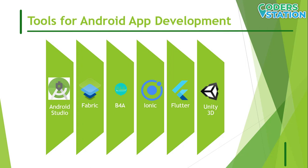Ionic is another popular mobile app development tool used to create scalable and feature-rich mobile Android applications. It is a cross-platform tool based on Sass and CSS languages. Flutter is a software development kit that helps build feature-rich, high-performance apps for web and mobile. Unity 3D is a tool specially developed to build mobile game applications and can develop 2D and 3D games with multiple game-specific features.